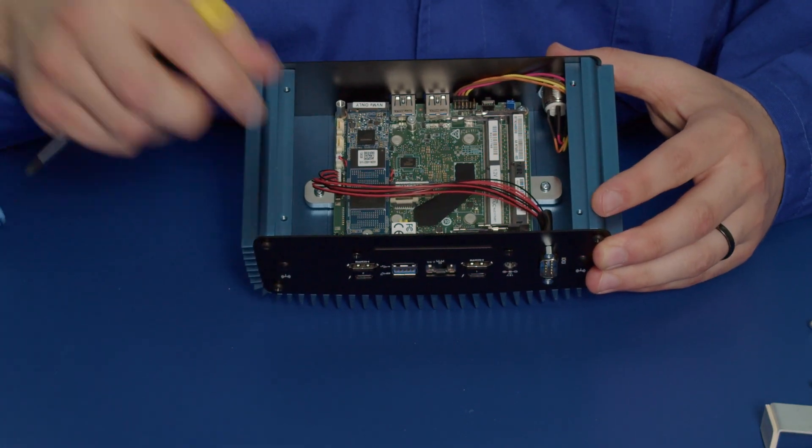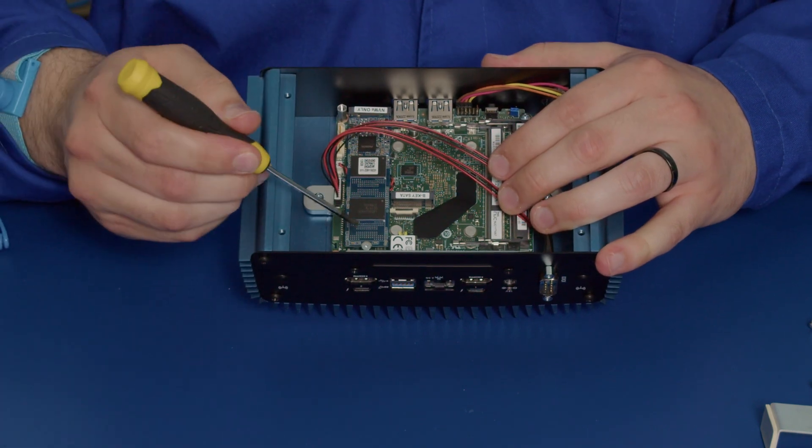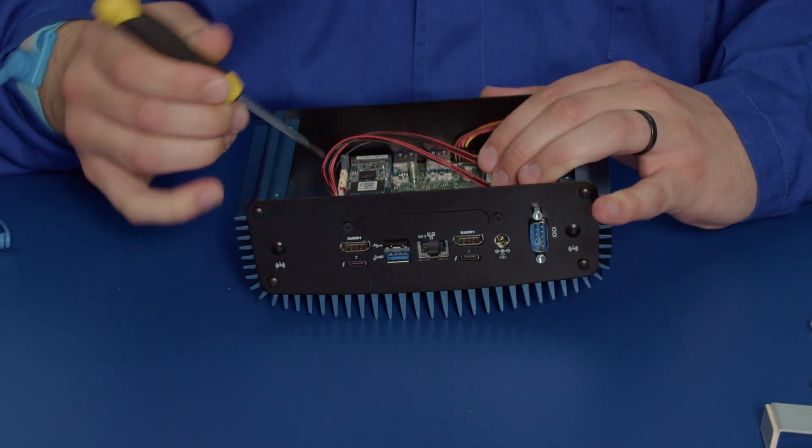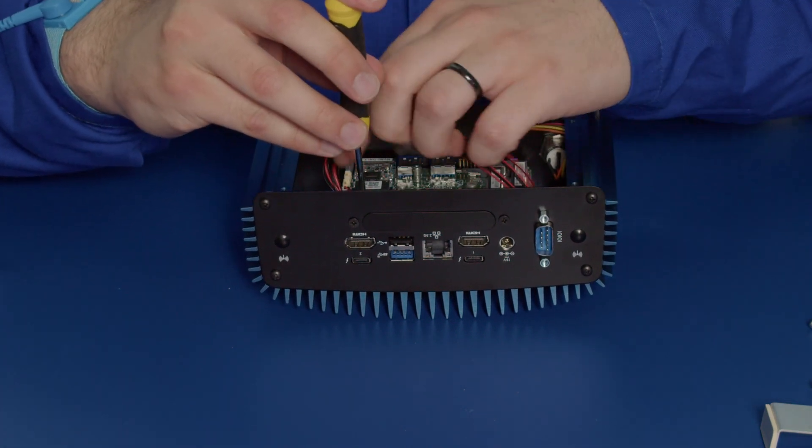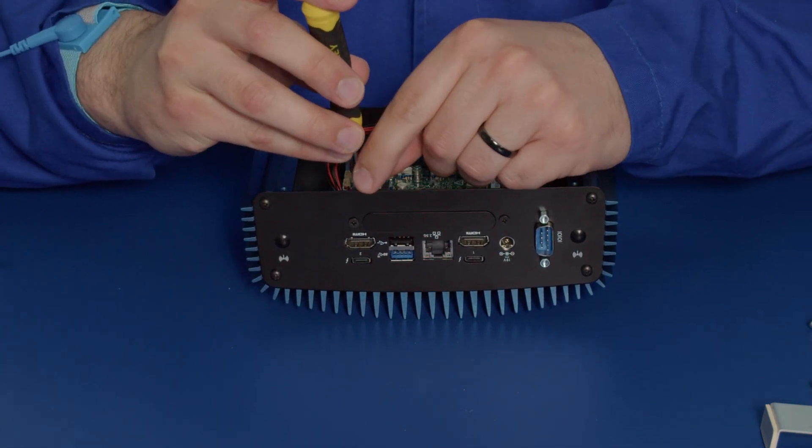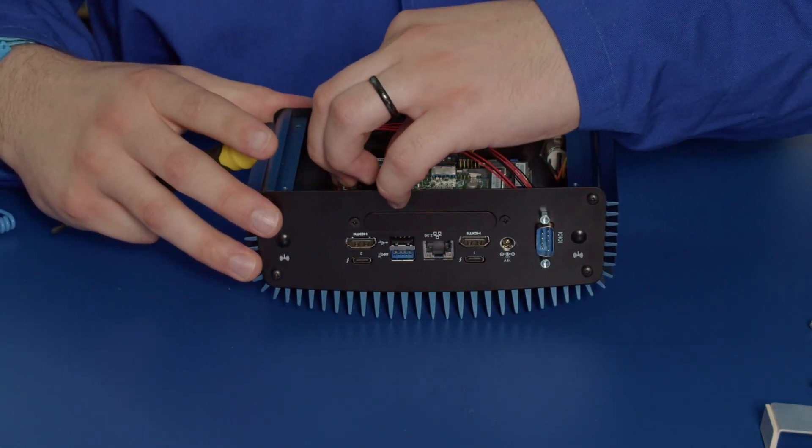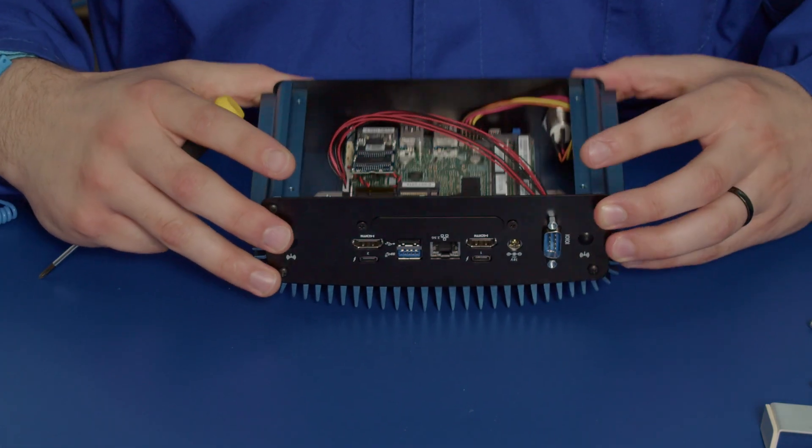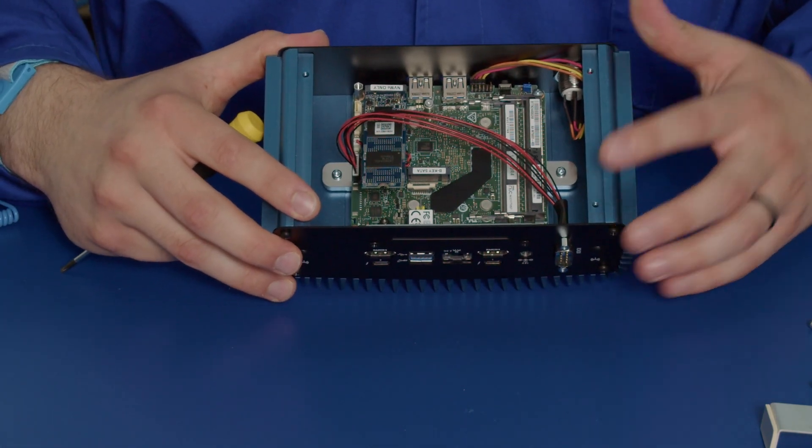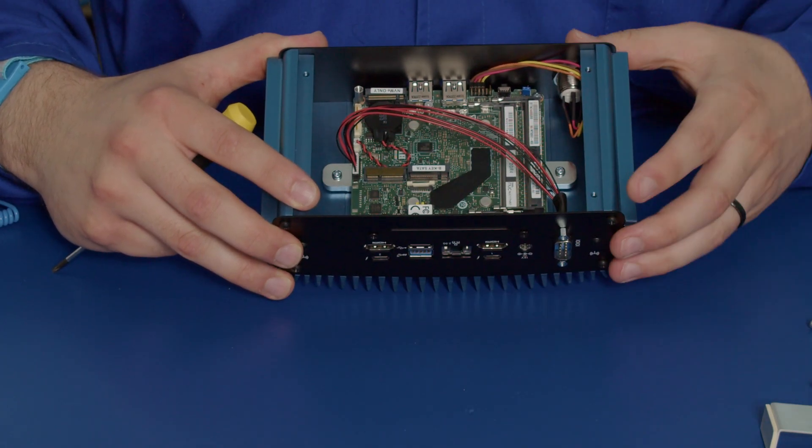So now our SSD is exposed and just be careful of this wire here and all we have to do now is unscrew the M.2 screw holding down the SSD. Now you can see the SSD has popped up at about a 30 degree angle. Now you can just pull that straight out.